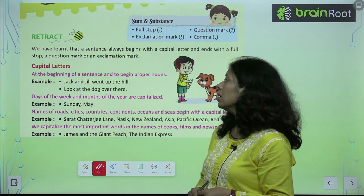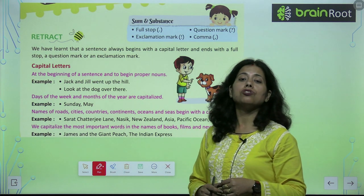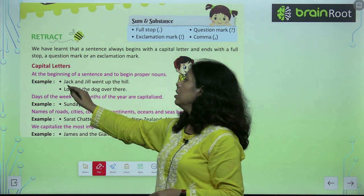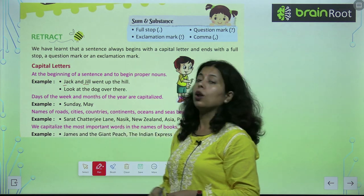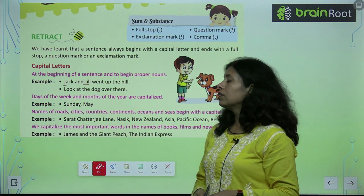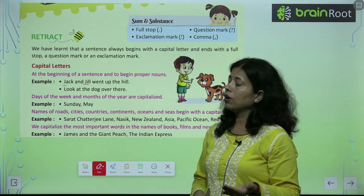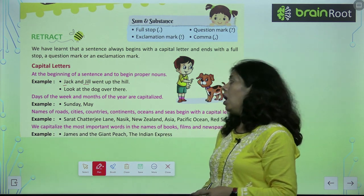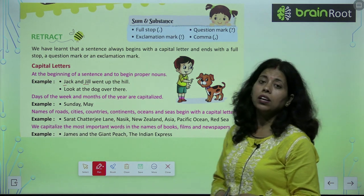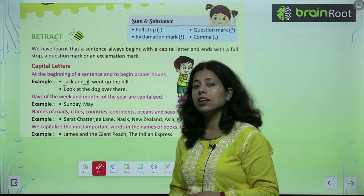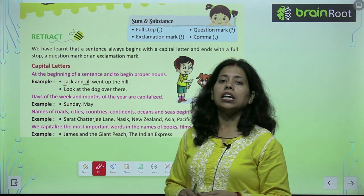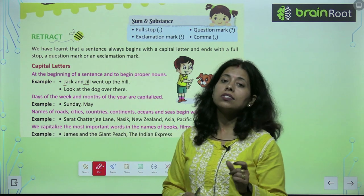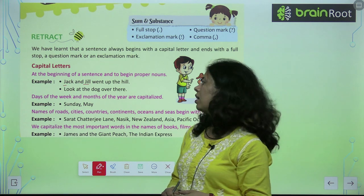For the word Austria, we have to start the word with a capital letter because this is the starting of the sentence. Months of the year are capitalized — January, February, Sunday, Monday. When you write these, the first letter must always be capital.